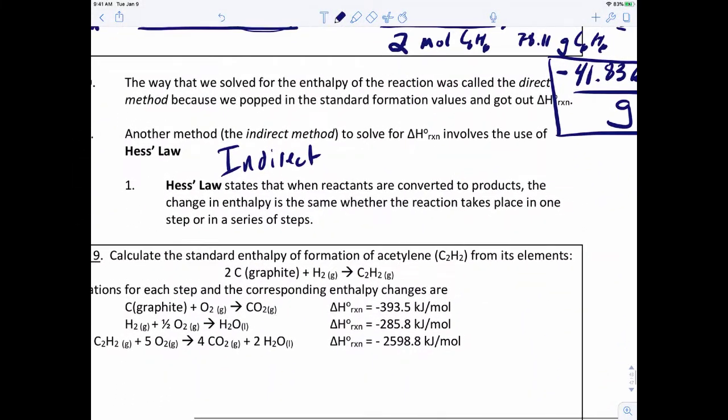All right, so if we want to take a look at the next one, the indirect method, we have to use something called Hess's Law. And here's what Hess's Law says. Hess's Law states that when reactants are converted to products, the change in enthalpy for the reaction is going to be the same whether the reaction takes place in one step or in a series of steps.